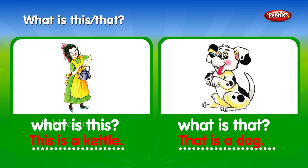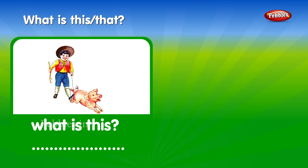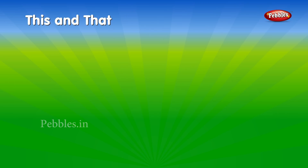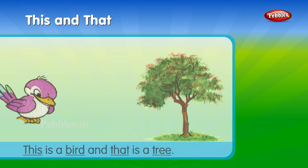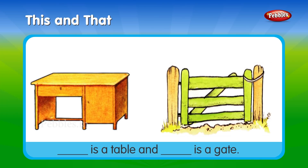What is that? That is a dog. What is this? This is a pig. What is that? That is a fish. This and that: This is a bird. And that is a tree. ___ is a table. And ___ is a gate.